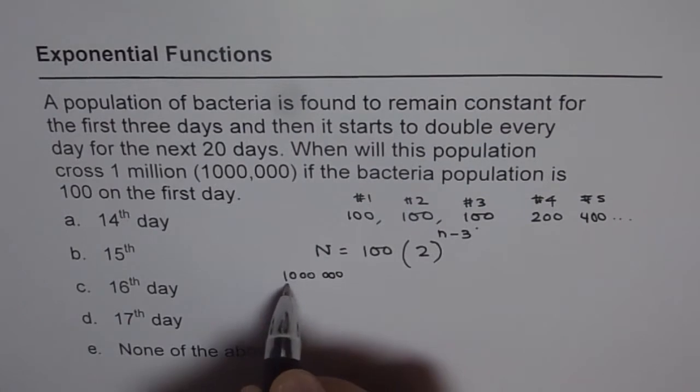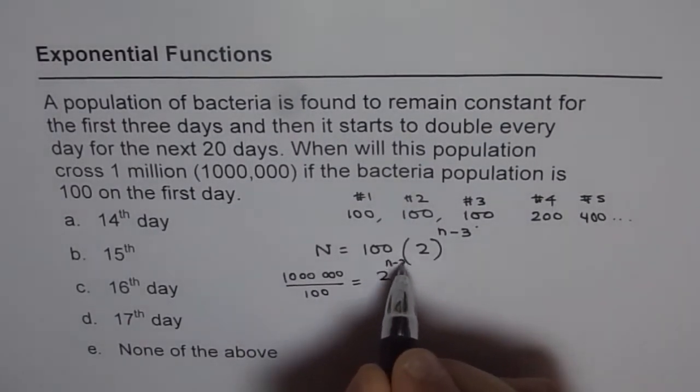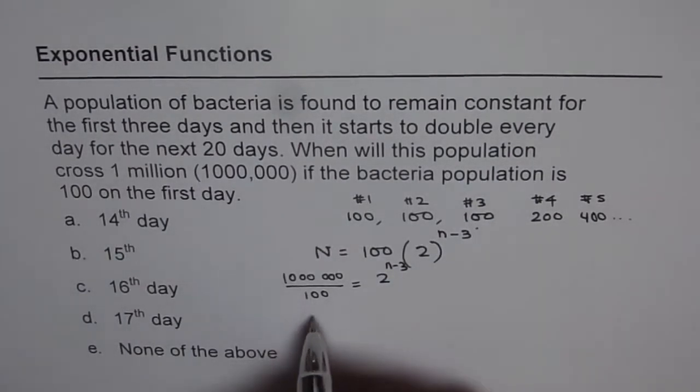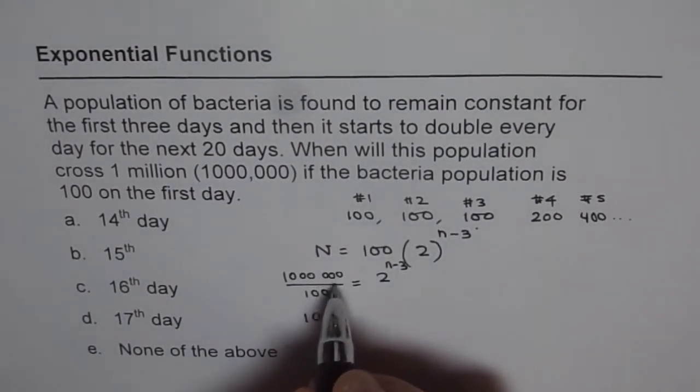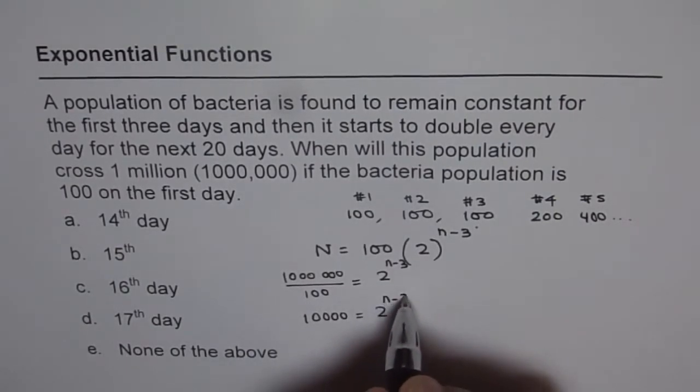...should equal 2 to the power of n minus 3. So at this stage now we have 10,000 equals 2 to the power of n minus 3.